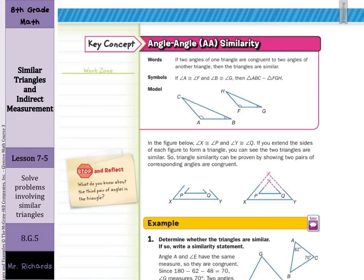What we really just said was that angle-angle similarity: if two angles of one triangle are congruent to two angles of another triangle, then the triangles are similar. In other words, in these two triangles, if angle A is congruent to angle F and angle B is congruent to angle G, then triangle ABC is similar to FGH.